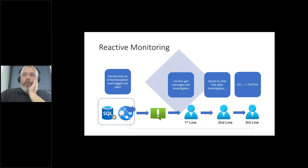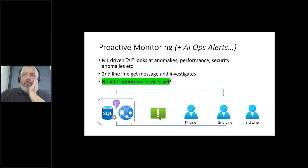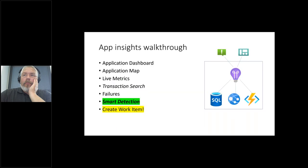In a reactive monitoring situation: service gets an error, first line gets a message, sends second line to investigate, third line solves it and tries to fix and remove the error. That's reactive monitoring — something has already failed. In a proactive monitoring setup, machine learning-driven AI looks at anomalies, performance, security events, and so on. It sends a message saying something is wrong. In this case, we can send it directly to second line and they can start looking at it and maybe fix something before anything has ever happened. To do that, we actually use Application Insights.